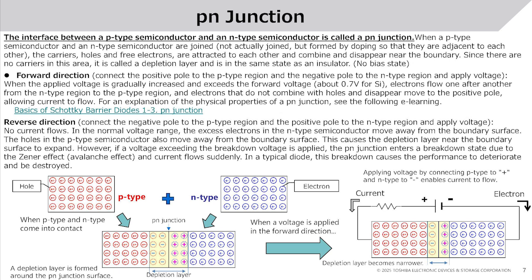Reverse direction: connect the negative pole to the p-type region and the positive pole to the n-type region and apply voltage — no current flows. In the normal voltage range, excess electrons in the n-type semiconductor move away from the boundary surface, and holes in the p-type semiconductor also move away, causing the depletion layer to expand. However, if a voltage exceeding the breakdown voltage is applied, the p-n junction enters a breakdown state due to the Zener effect or avalanche effect, and current flows suddenly. In a typical diode, this breakdown causes performance to deteriorate and the device to be destroyed.